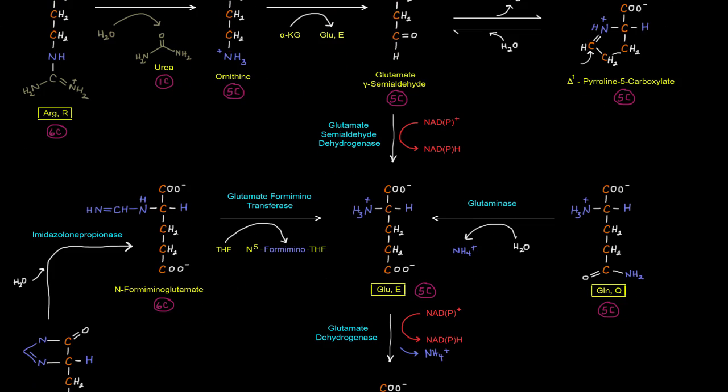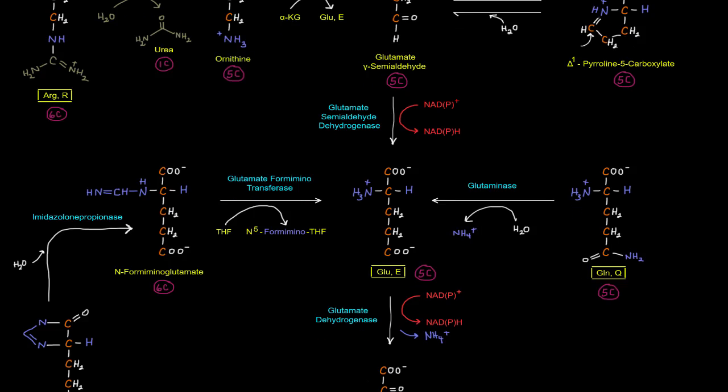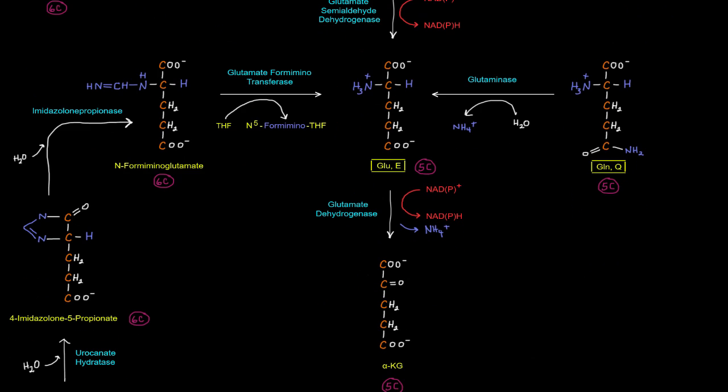And you'll notice a lot of arrows pointing at glutamate, and that's because basically all these things end up at glutamate. And then once we have glutamate, the glutamate dehydrogenase reaction can give us some NADH or NADPH when removing that amino group to give the alpha-ketoglutarate that can go to the TCA cycle.